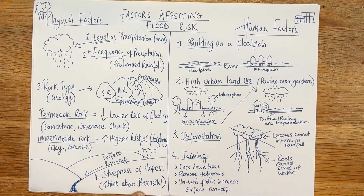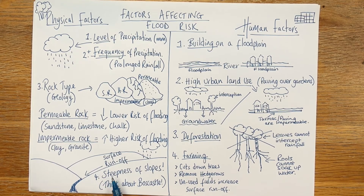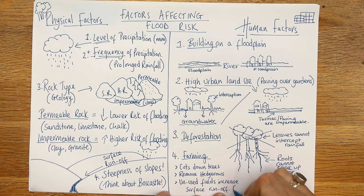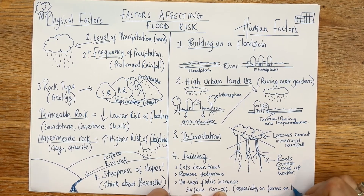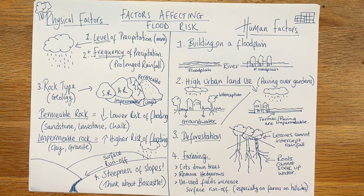Surface runoff is the movement of rainfall down slopes or across flat fields on its way to the sea. This is especially an issue on farms on hillsides, of which we have lots in the UK. So there you go — your physical factors and human factors that contribute to increasing flood risk. I hope that's helpful.